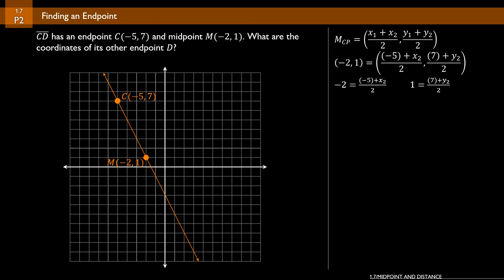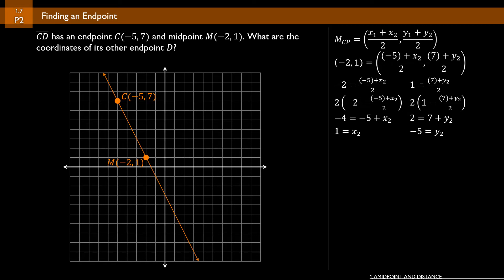Since everything on the right side is divided by 2, we remove that denominator by multiplying both equations by 2. This gives us negative 4 equals negative 5 plus x2, and 2 equals 7 plus y2. Solving: add 5 to both sides in the first equation, subtract 7 from both sides in the second. We get x2 equals 1 and y2 equals negative 5. So endpoint D is the ordered pair (1, -5).